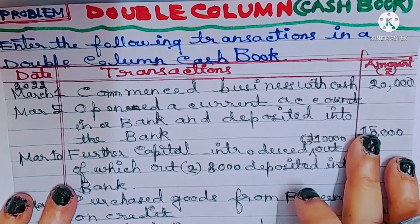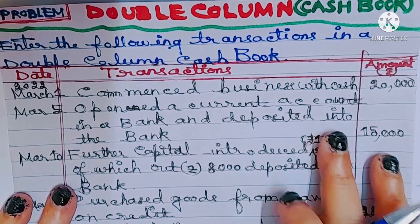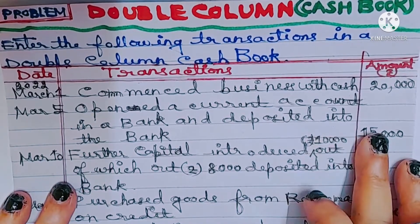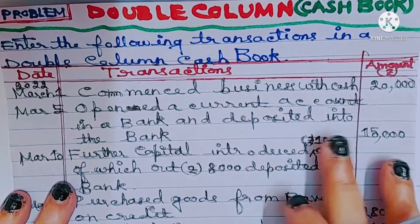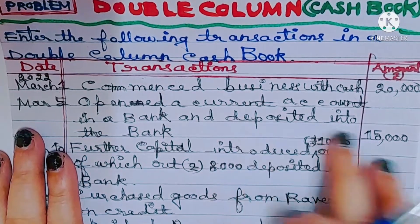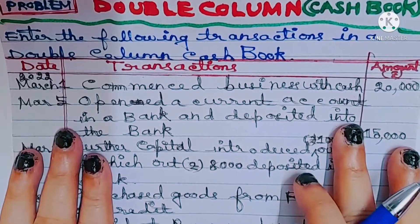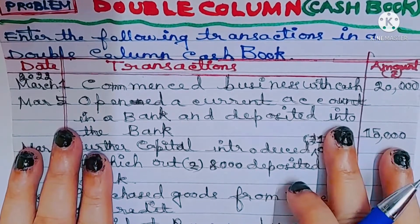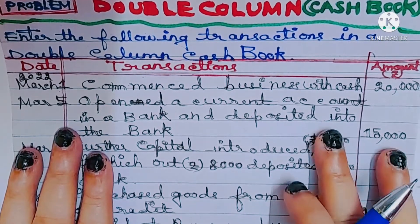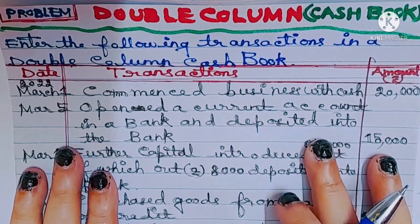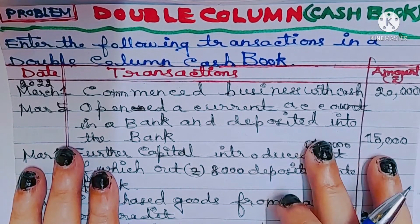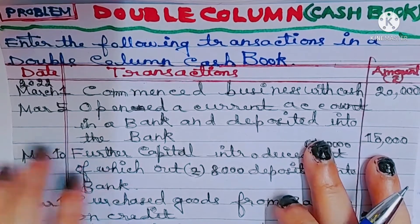This is a contra entry. When cash is deposited into bank, the journal entry will be bank account debit to cash account 15,000. A contra entry is a transaction which involves both cash and bank — both the debit aspect and credit aspect of a transaction get reflected in the cash book. A contra entry affects both bank account and cash account.